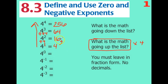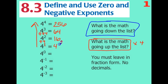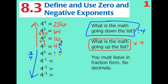Now we're going to go back the other direction. Going down the list, instead of multiplying, we're dividing by four. To get to four to the power of zero, I'm going to divide by four again. Four divided by four is just one. So anything to the power of zero is really going to be one. The up arrow means 'to the power of' — that button is above the plus sign on your calculator. Anything to the power of zero is just one.